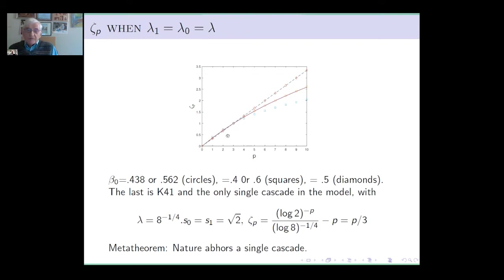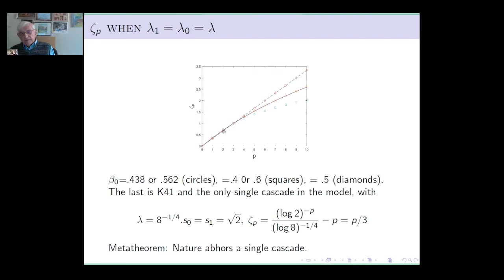What happens: if beta_0 is equal to 0.38, then we fall exactly — really exactly — on the target She-Lévêque curve. Notice that zeta_1 is a little bit above 1/3 and zeta_2 is a little bit above 2/3. I'm told that recent experimental results show these numbers are indeed greater than the Kolmogorov values — even 0.7 instead of 0.66 has been measured — so this is really very close to experiment at this particular value. If you choose 0.5 you get Kolmogorov.